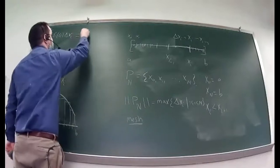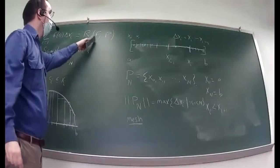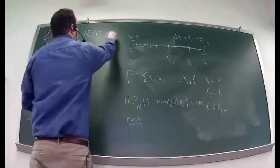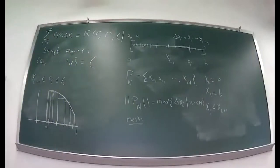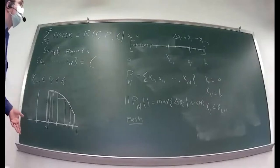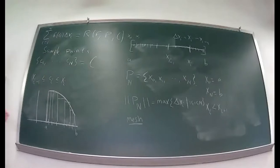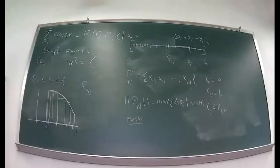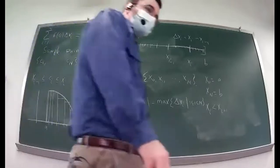Adding up all these approximating rectangles — the sum of f(cᵢ) times Δxᵢ from i = 1 to n — is called a Riemann sum. We use the notation R(f, P) for the Riemann sum for function f and partition P, and it also depends on the sample points, so you might write c for the collection of sample points, giving R(f, P, c). Choosing sample points to be right endpoints gives Rₙ; choosing left endpoints gives Lₙ, and so on. More generally, you can make a Riemann sum from any partition and any choice of sample points.